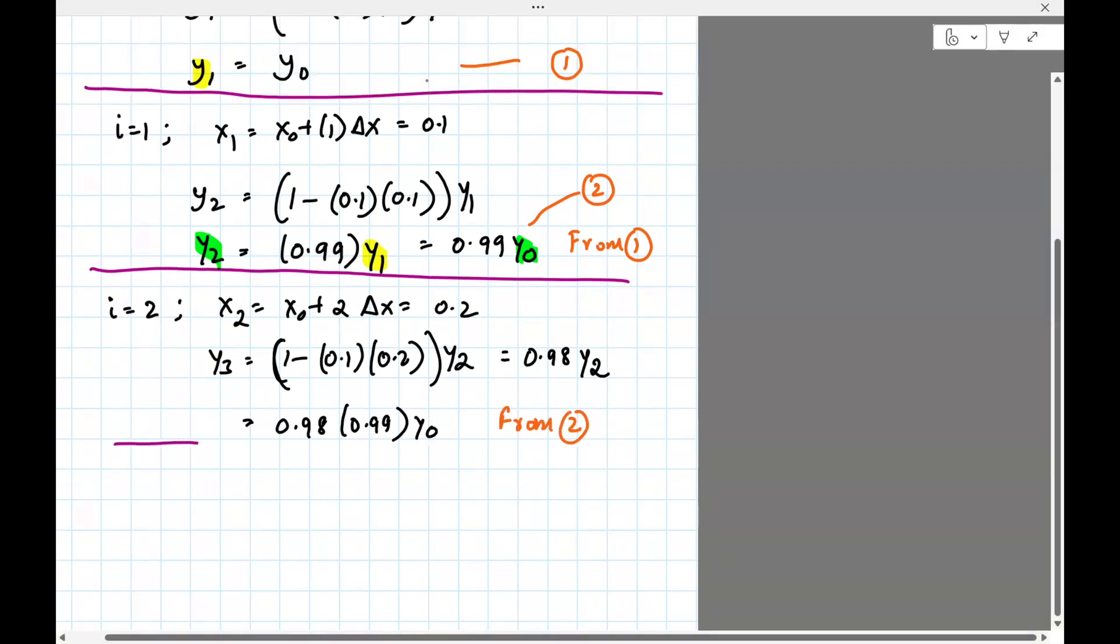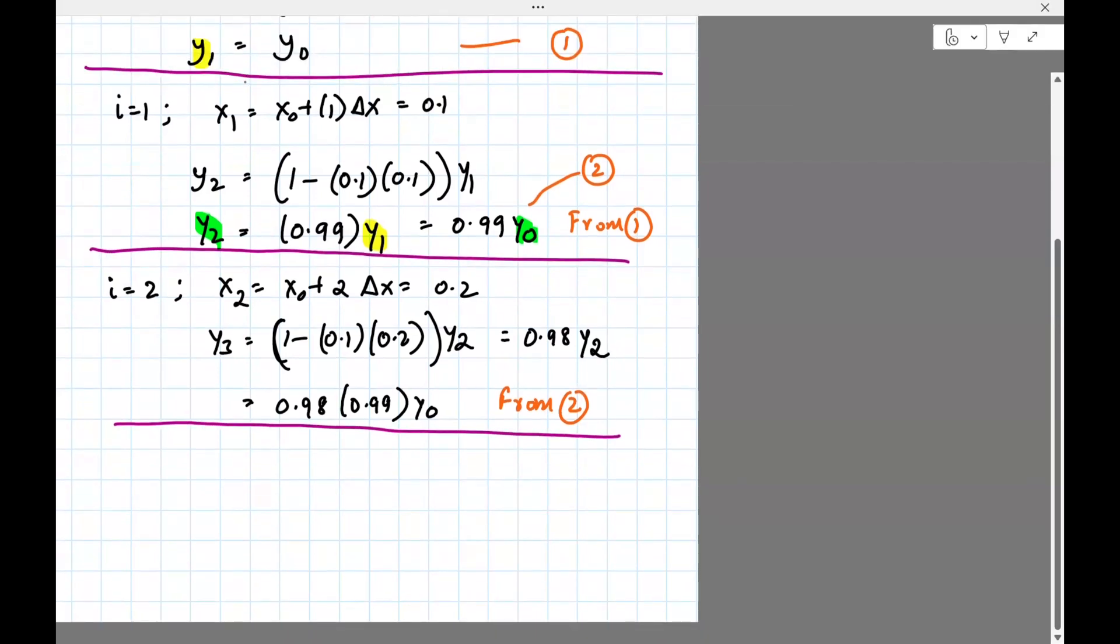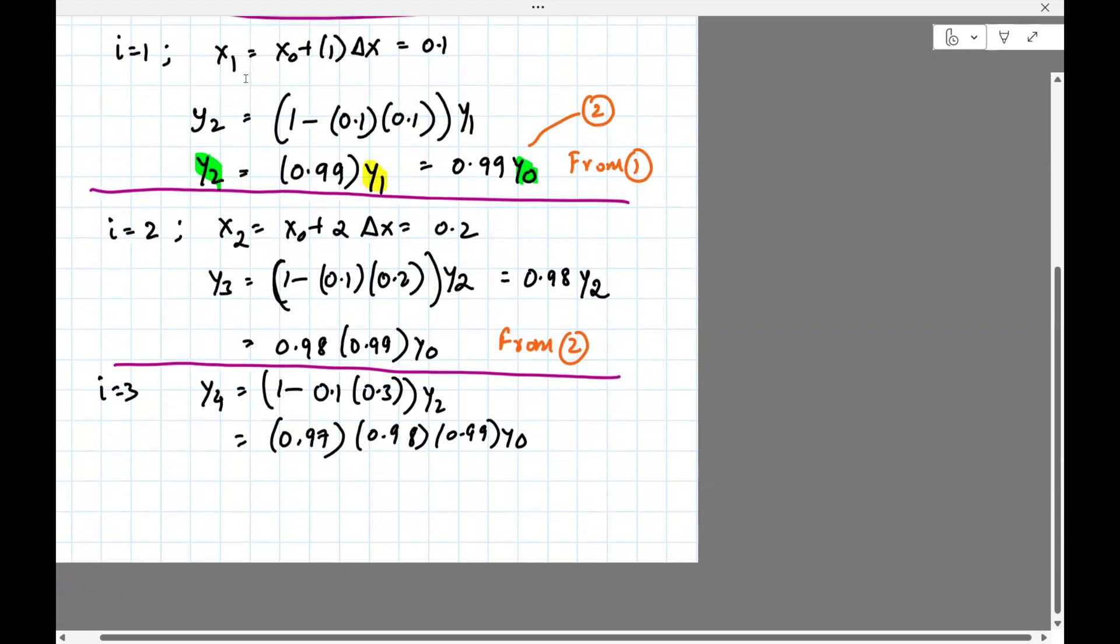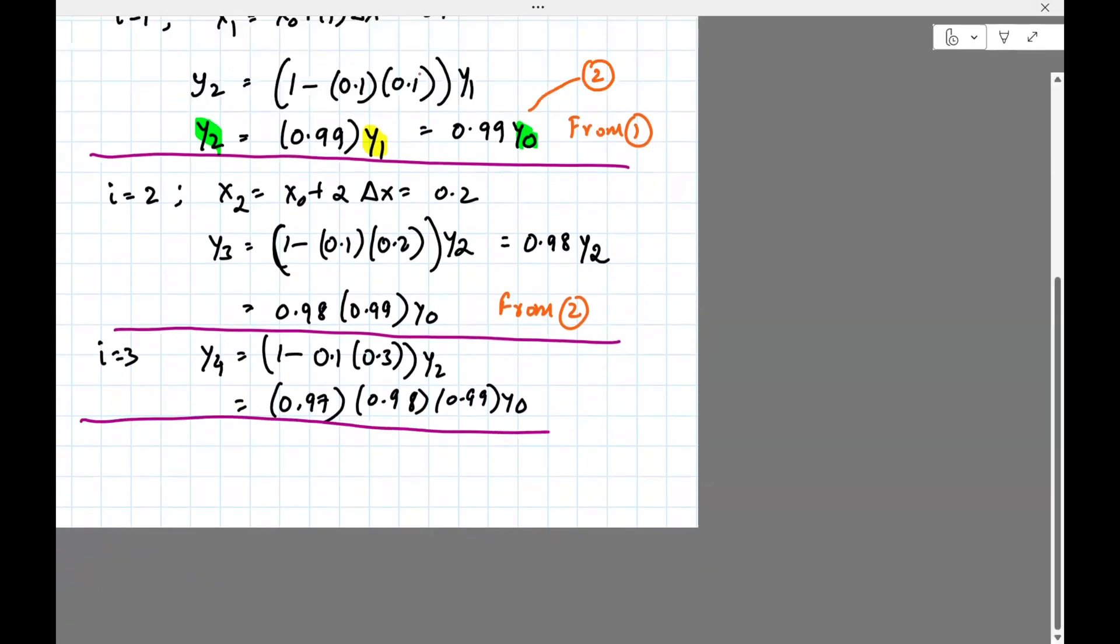So I'll go a little faster now that I did it for 2. i equals 3 will be y4 equals 1 minus 0.1 times 0.3 y2, which is 0.97, 0.98, 0.99 y0. And it's easy to see that it's kind of a pattern which you can easily make out.